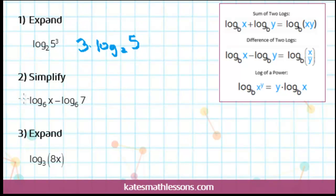The second one asks us to simplify, and we have two logs that are being subtracted. They have the same base, so that means we can use this rule here, the difference of two logs. The difference of two logs rule says that if you're subtracting two logs with the same base, you can rewrite it as one logarithm, and you just write it as the quotient of these two numbers.